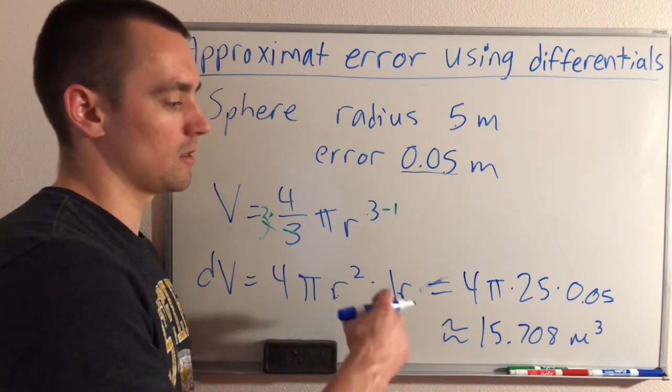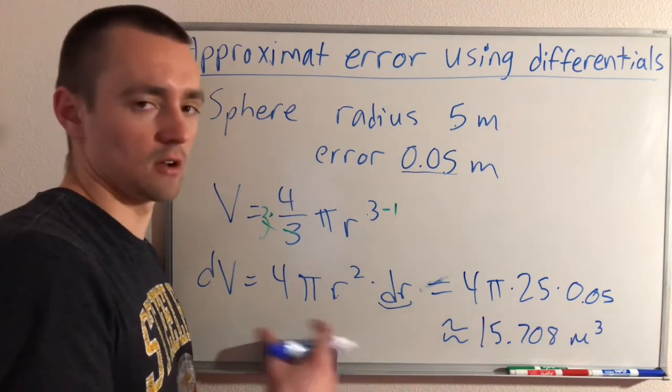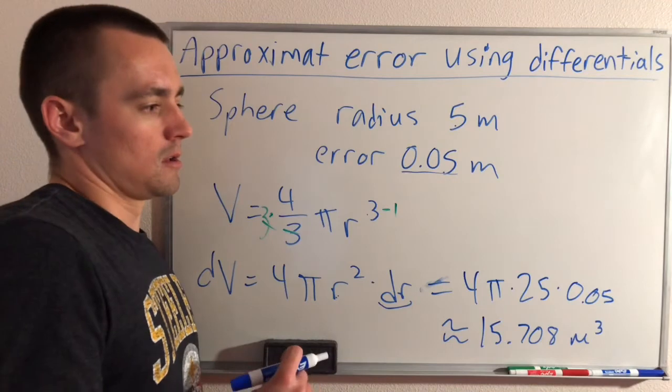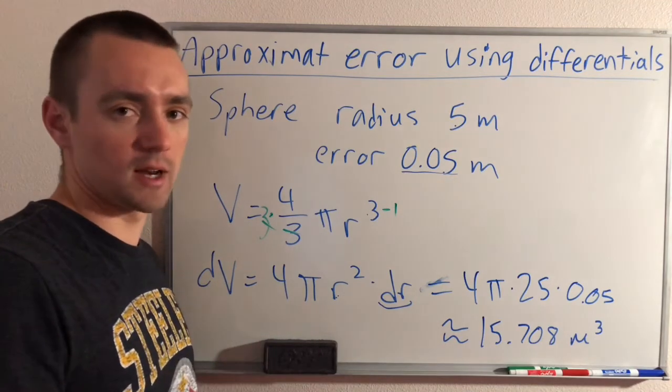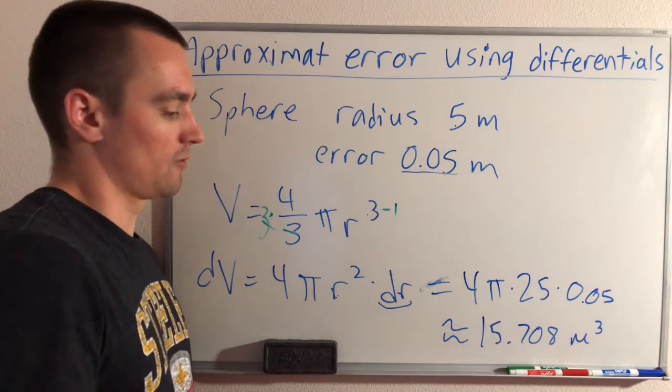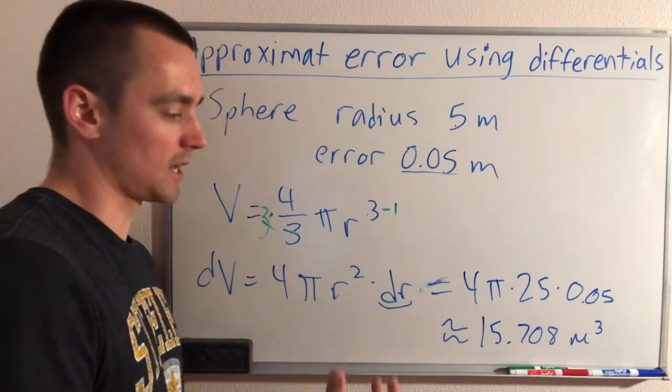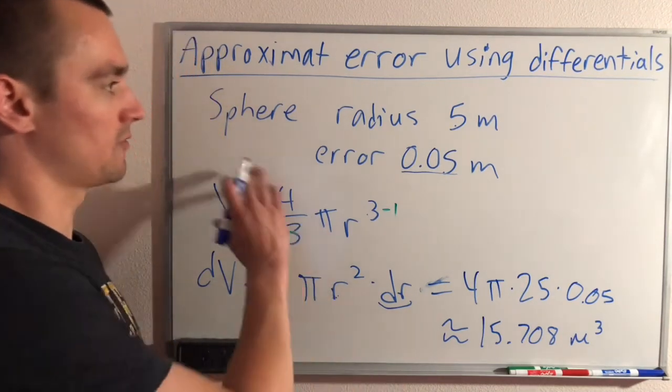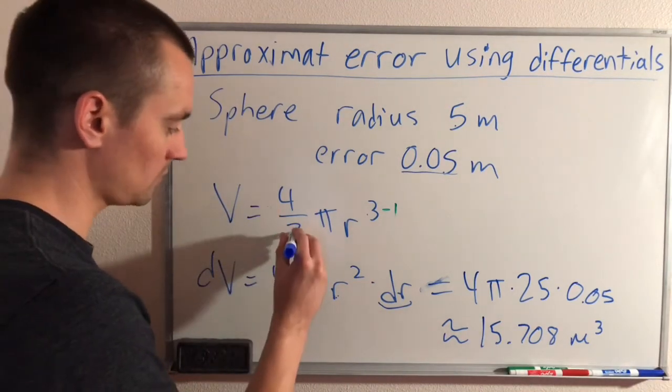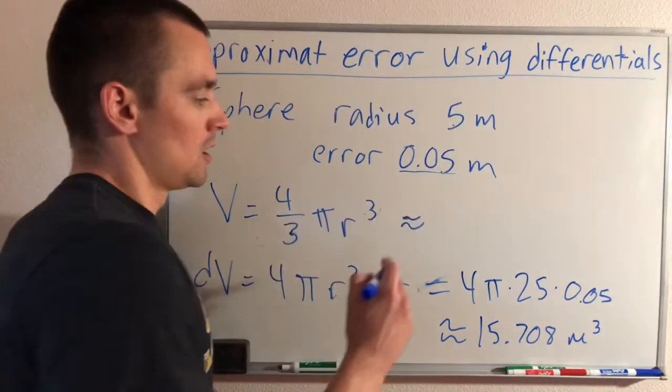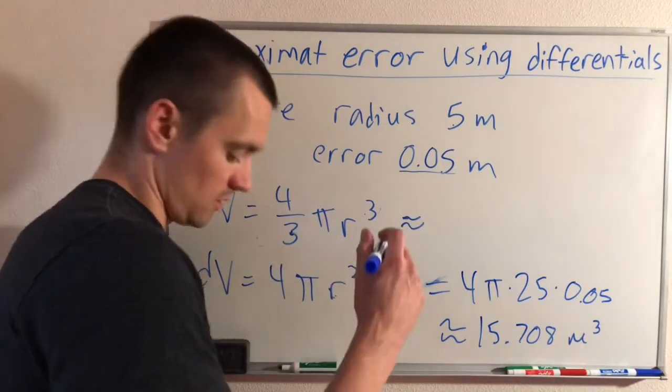Now what we want to think about on top of that is how significant this possible error is, and that's where percentage error comes into play. If we want to think about the percentage error of this, we're also going to need to figure out the actual volume of our sphere. Going back to our volume equation, four thirds pi r cubed, if we plug in our radius of five, it'll give us about 523.599.